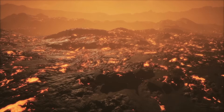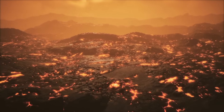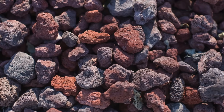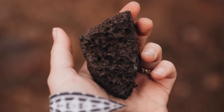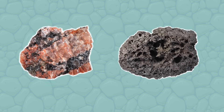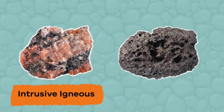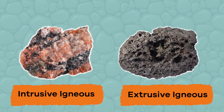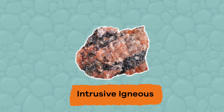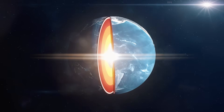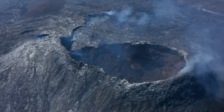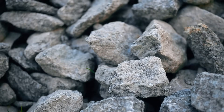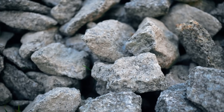Sometimes gas bubbles get trapped inside the rock during the cooling process. If this occurs, there will be tiny holes and spaces left inside the rock. Igneous rocks are divided into two groups: intrusive igneous and extrusive igneous. Intrusive igneous rocks are sometimes called plutonic rocks. They are formed when magma slowly cools inside the Earth over a long period of time. Since they cool very slowly, it allows large crystals to form inside of them.